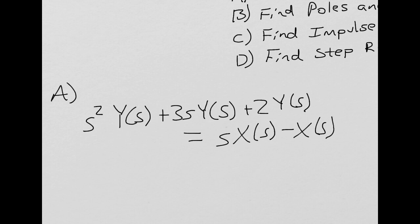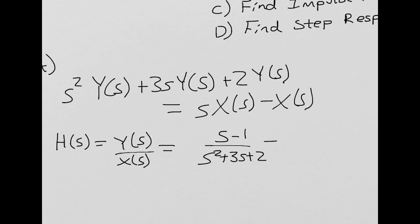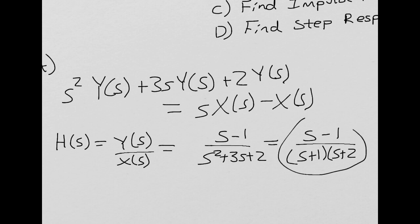We know that the transfer function H(s) equals Y(s) over X(s). So we solve for Y(s)/X(s) in this equation, and we end up with (s − 1) over (s² + 3s + 2). That simplifies down to (s − 1) over (s + 1)(s + 2). And so there's our transfer function.